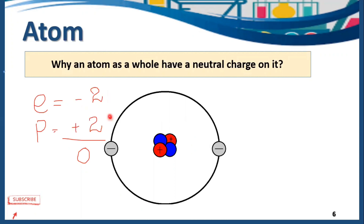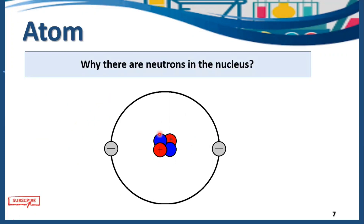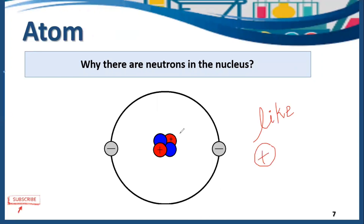We have two electrons and two protons in helium. Have you ever thought about why neutrons are present inside the nucleus even though they have no charge? We know that like charges repel each other — there is always repulsion between like charges. Inside the nucleus you can see we have two protons, and these two protons have a positive charge, so of course they will repel each other.